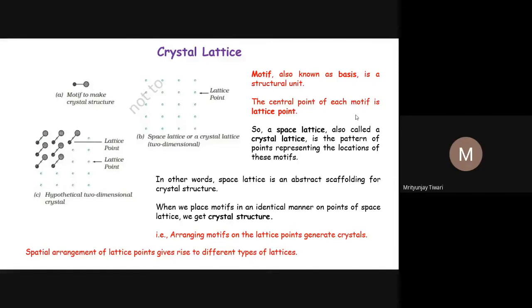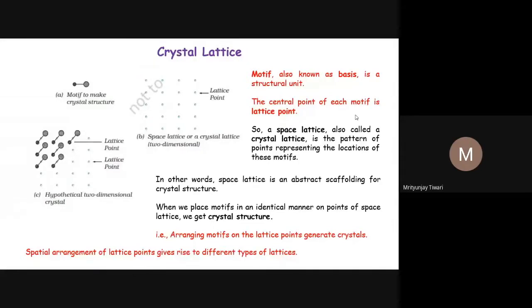Depending on the strength of these interactions, the melting and boiling points of these materials change. Covalent bonds are very strong, so covalent solids have the highest melting and boiling points. When we say covalent solids, we mean the interaction between all particles is covalent — it doesn't mean that molecules having covalent bonds always have high melting points. For example, water molecules interact via weak hydrogen bonds. That is why in the solid state, since these are weak interactions, the solids are usually volatile liquids or gases at room temperature.